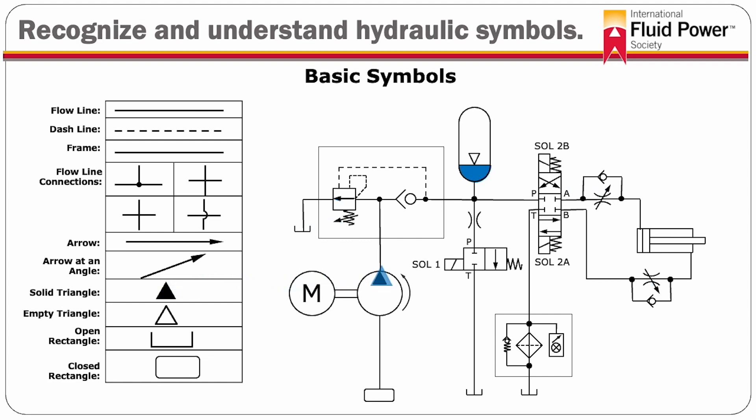Solid triangle. An isosceles triangle that is filled in indicates a hydraulic energy source and also the direction of energy flow. Empty triangle. An isosceles triangle that is not filled in indicates a pneumatic energy source and also the direction of energy flow.